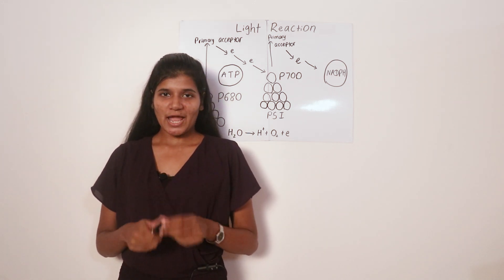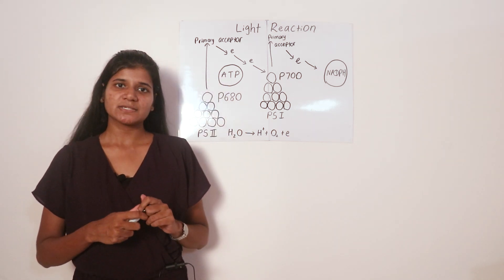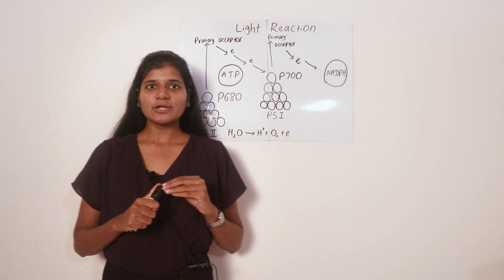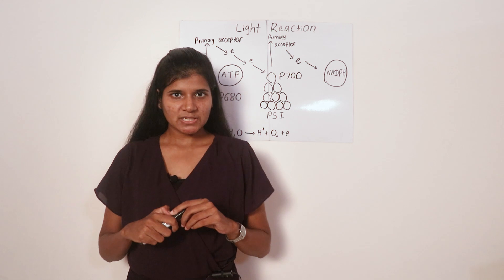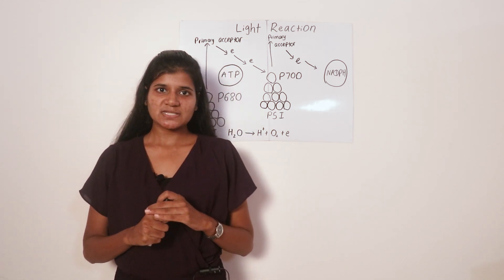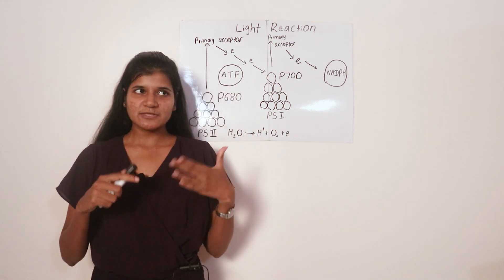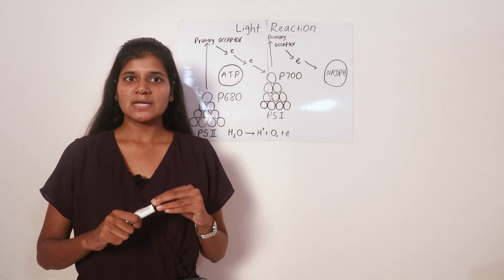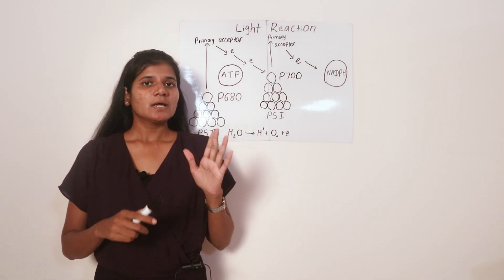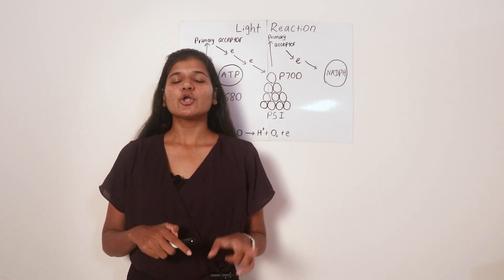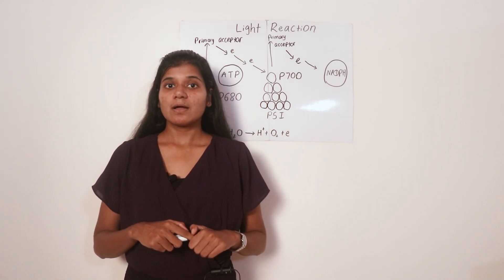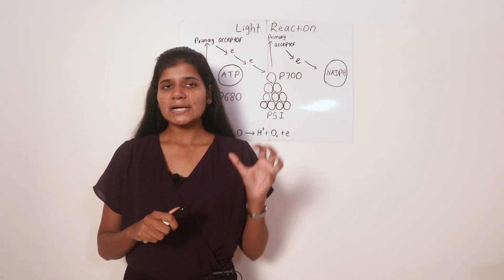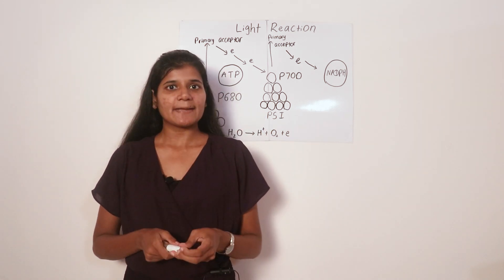The light reaction occurs in the thylakoid membranes of the chloroplast. These thylakoid membranes are fluid-filled sacs stacked together to form grana. On the thylakoid membranes, photosynthetic pigments and electron acceptors can be found. Photosynthetic pigments are molecules capable of absorbing visible light. There are two types: chlorophylls and carotenoids. Chlorophylls include chlorophyll A and chlorophyll B; carotenoids include carotenes and xanthophylls.